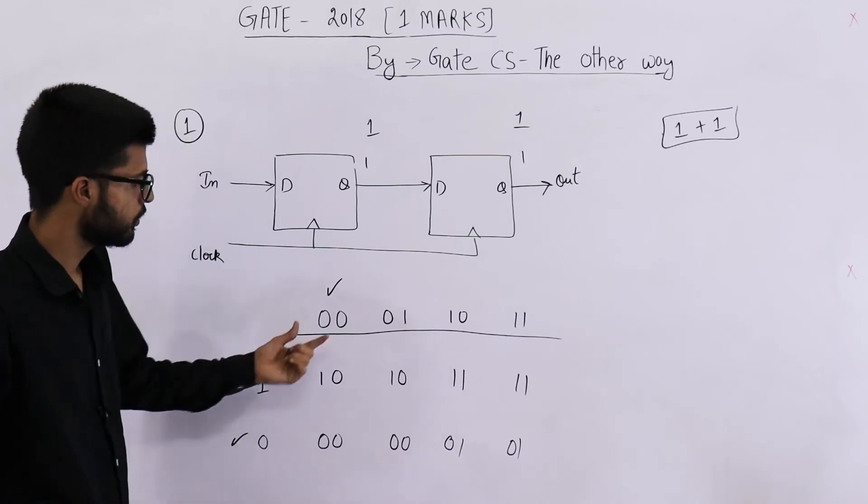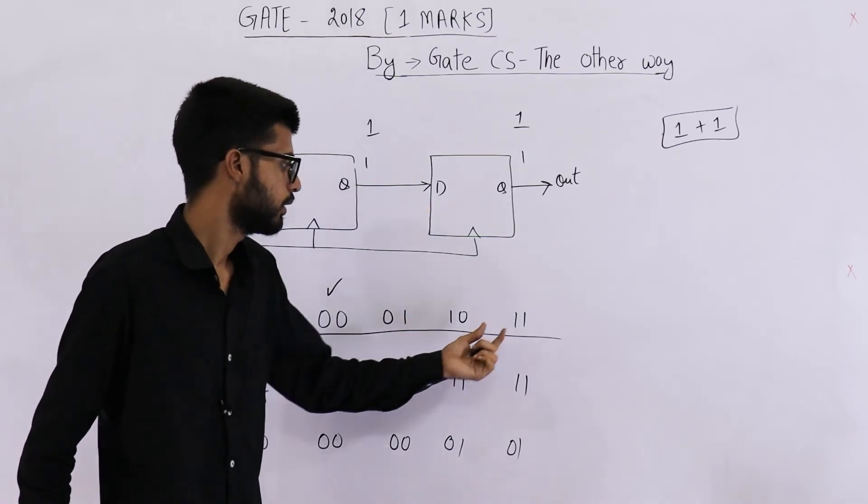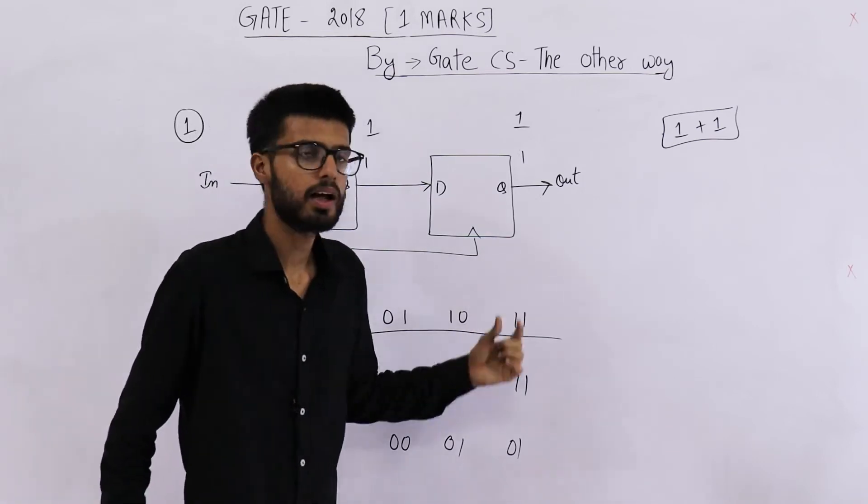Input is equal to 0, Q and Q both are 0, 0. When input is equal to 1, both are 1, 1. So there are total two such cases. Answer to this question is 2.